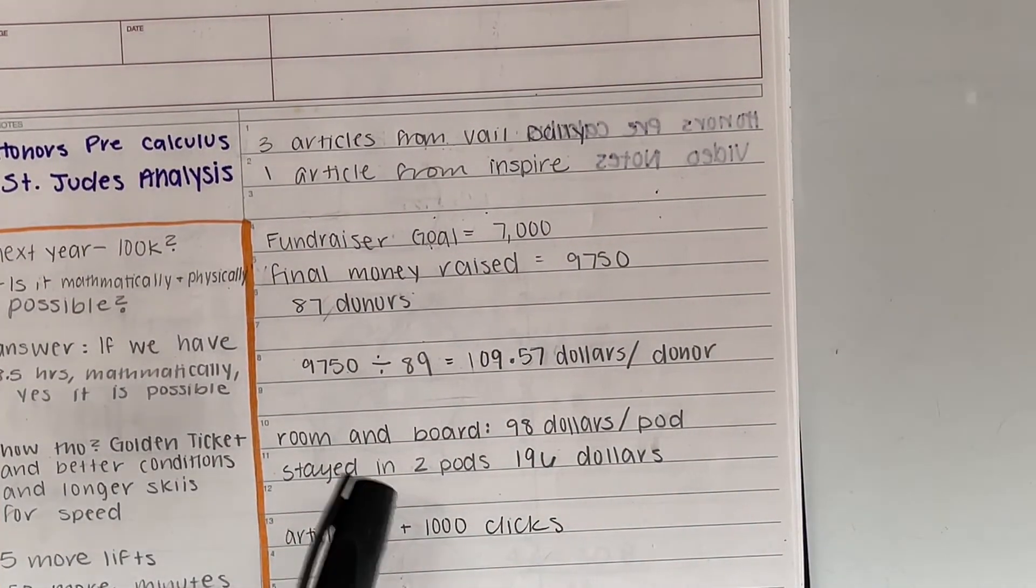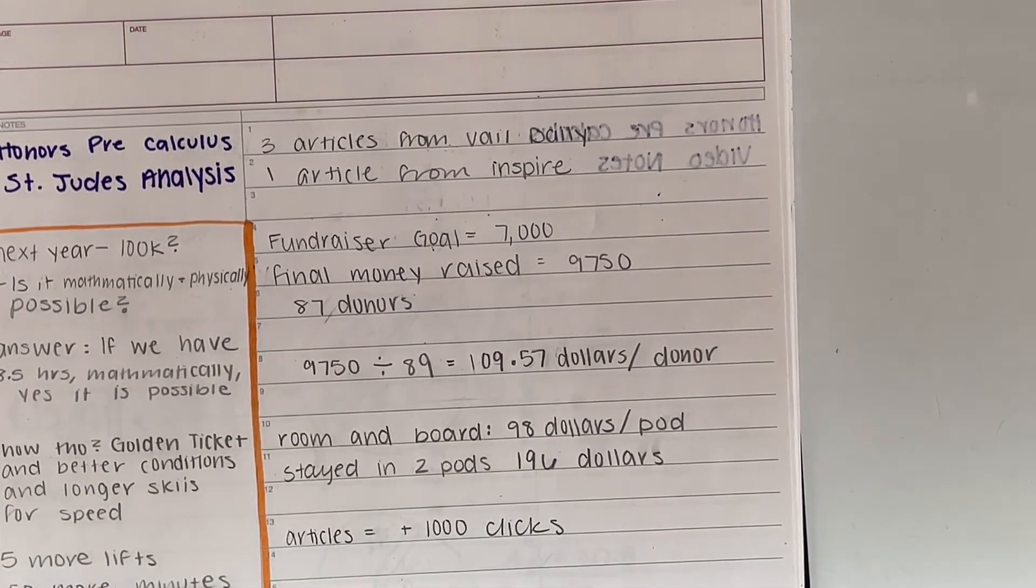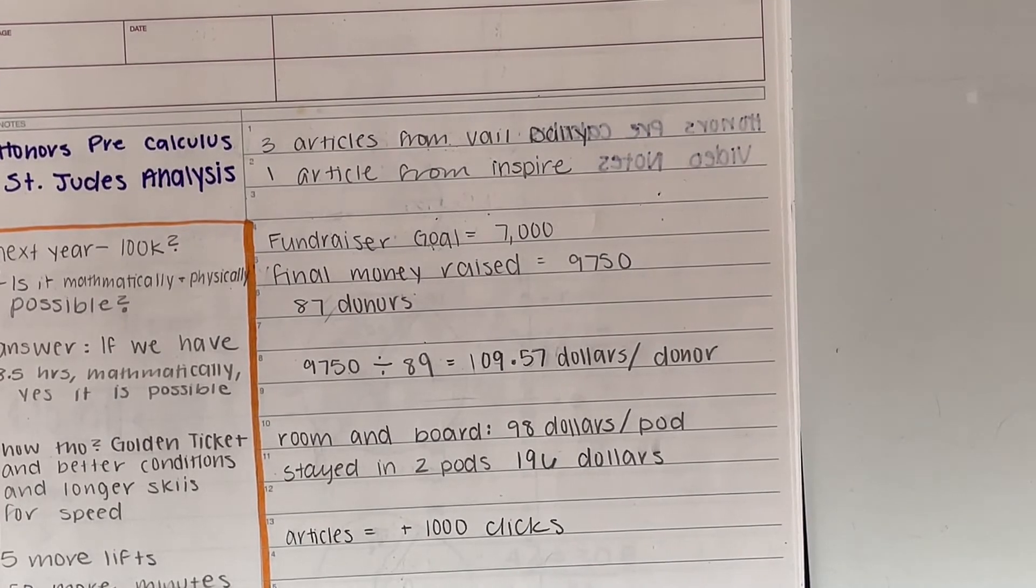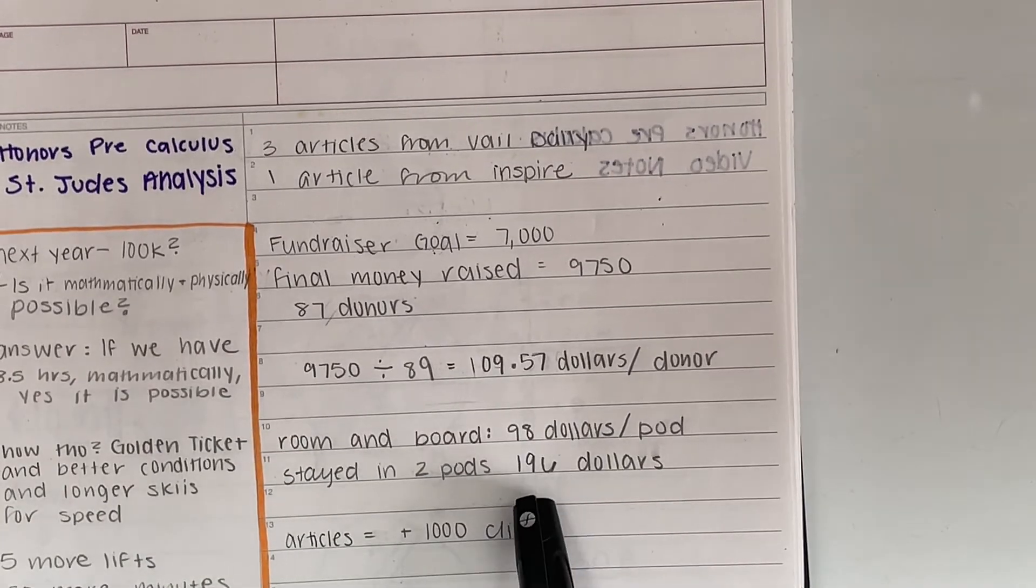Now our room and board, we stayed the night that was $98 per pod. And we actually got a $30 discount for what we were doing. So we stayed in two pods. So that's a total of $196.